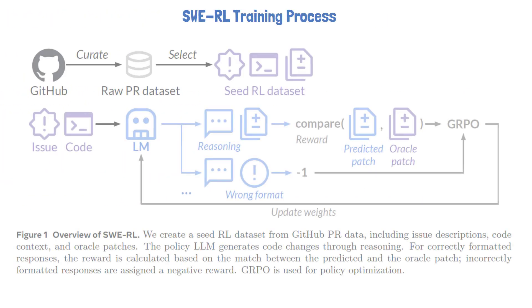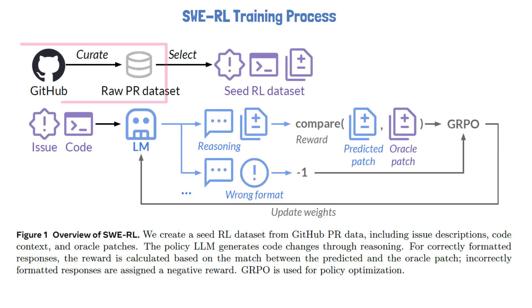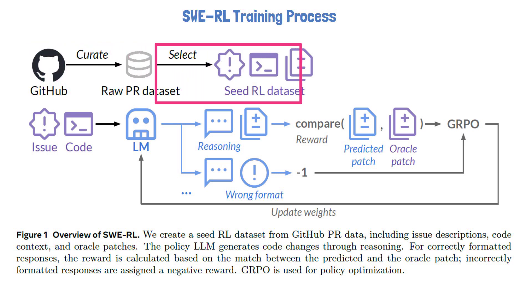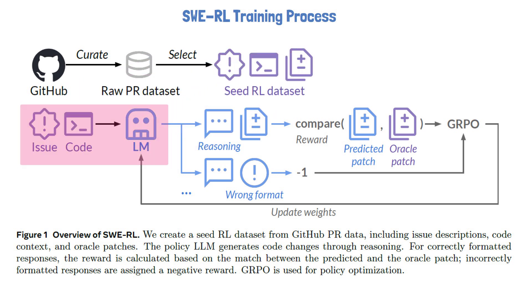Let's now move on to understand the training process using a figure from the paper. First, we already covered the data curation step where the researchers built a large pull request dataset. From this dataset, we select a subset of high-quality samples to create what they call the seed dataset for reinforcement learning. Each selected sample should have at least one linked GitHub issue where the issue describes a bug-fixing request and the code changes involve programming files. Then each sample is fed into the LLM after being converted into a consistent input prompt format.